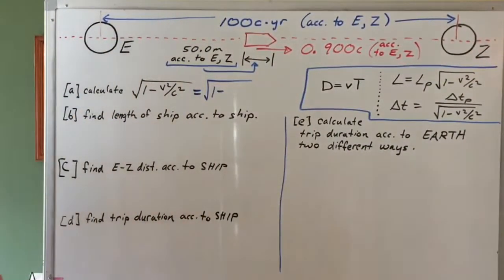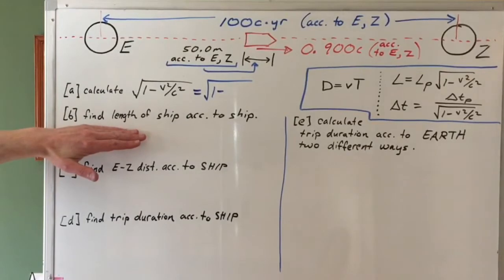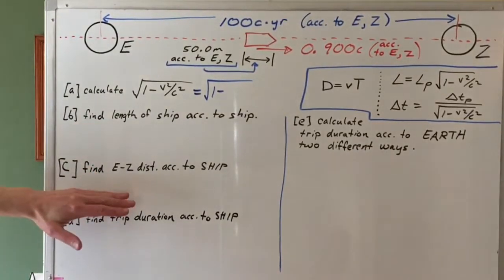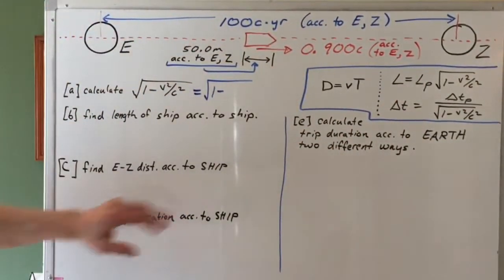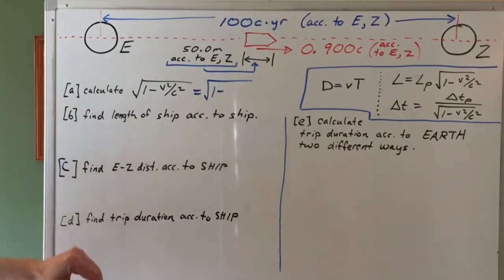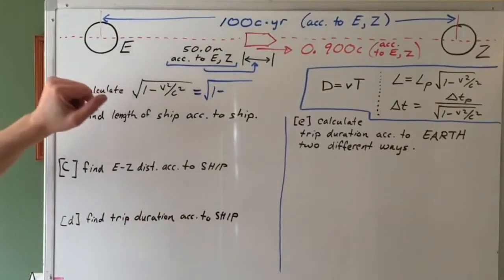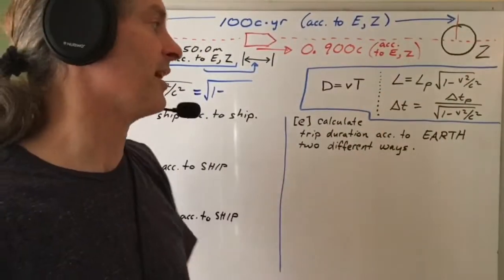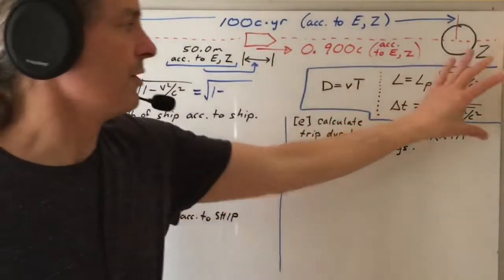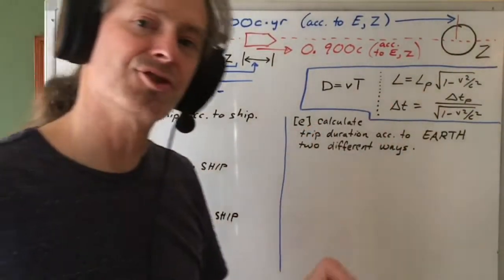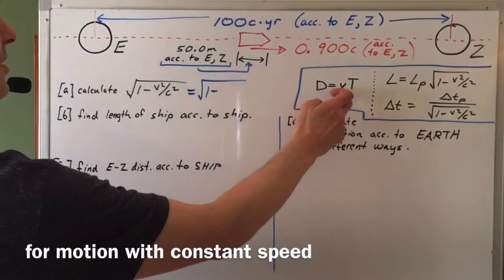So we have a series of questions. We know the length of the ship according to planet Earth and want to find the length according to the ship. We know the Earth to planet Z distance according to Earth and planet Z, and want to know that distance according to the ship. We also want to find the duration of the trip according to people on the ship and according to people on Earth. The tools we have are the length contraction relationship, the time dilation relationship, and the basic relationship between distance, speed, and time.